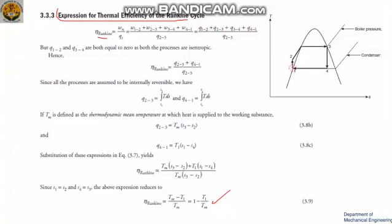From the diagram, you can see that q1 to 2 and q3 to 4 are zero because of the isentropic process. So you're left with only q2 to 3 and q4 to 1.